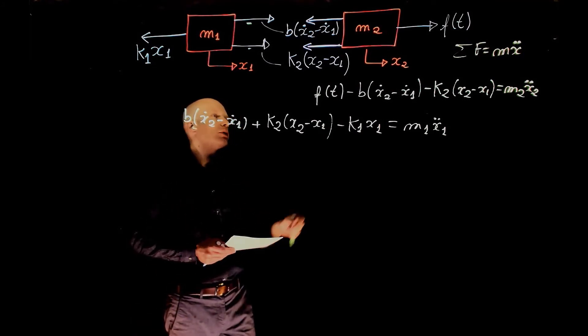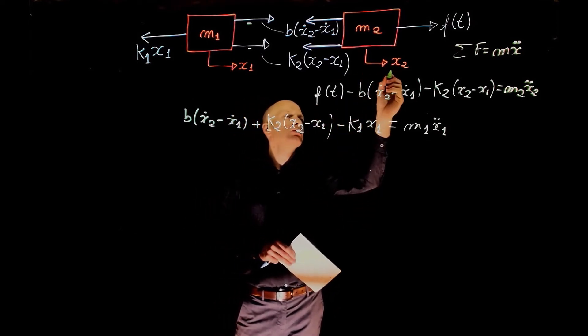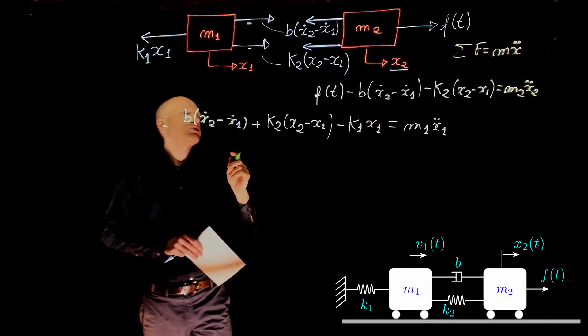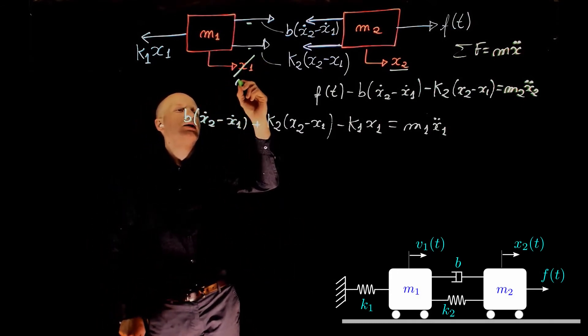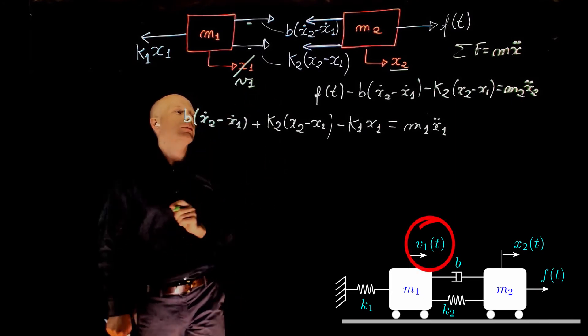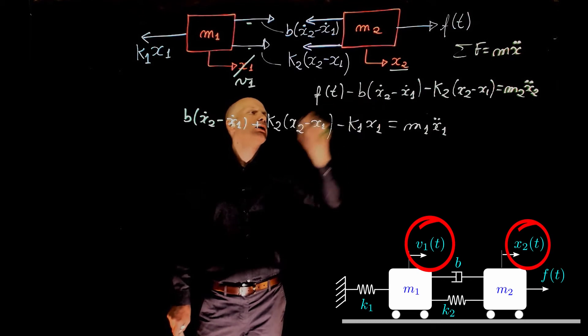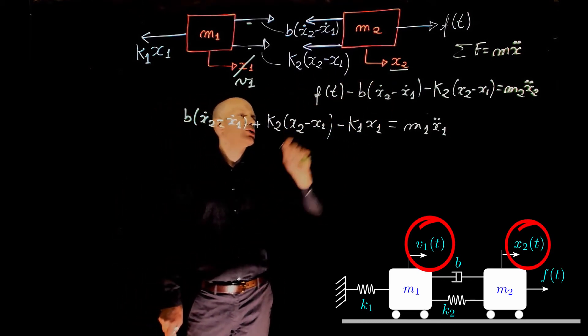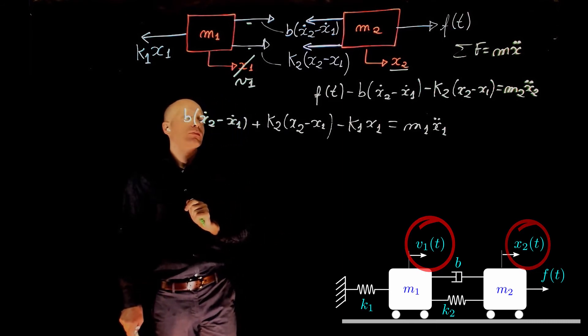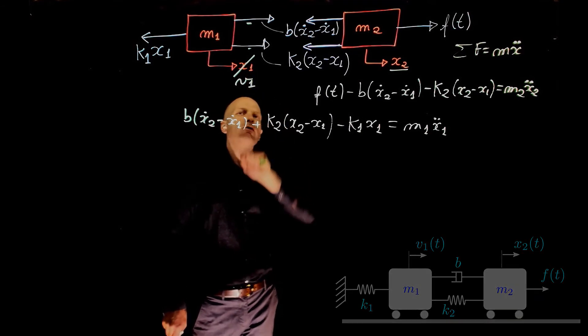So let's assume we are interested in the position of mass M2, that is x2. But now let's replace the position of mass M1 with the velocity of mass M1, V1. We are now interested in the relation between V1 and x2, position and velocity. How would these equations rearrange as a function of V1 instead of x1?